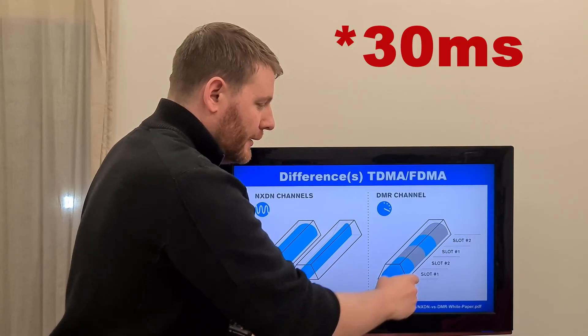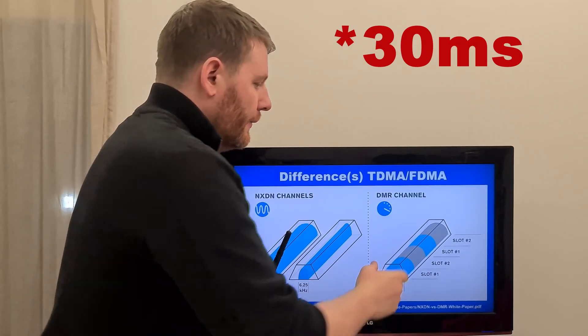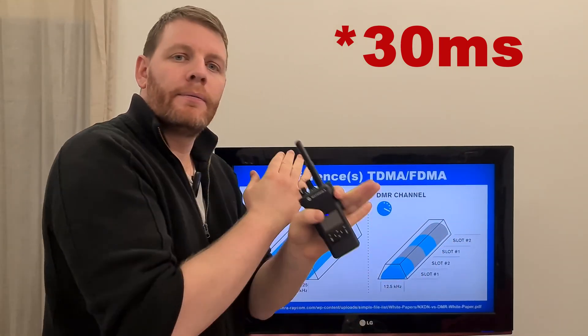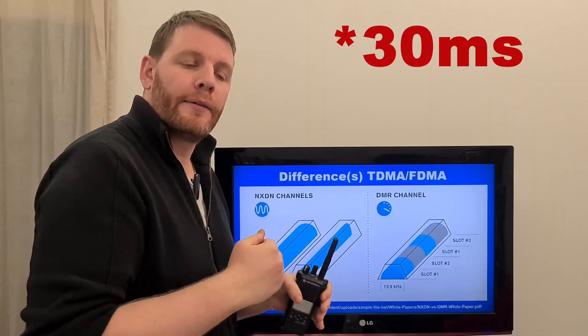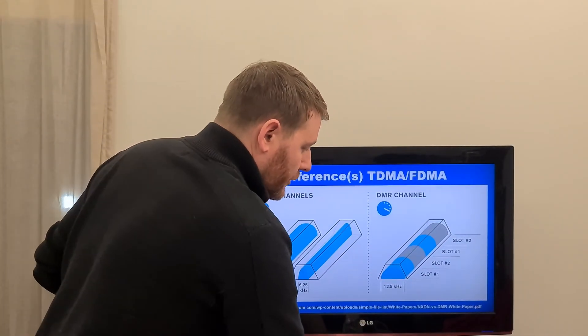So 30 seconds transmit, 30 seconds stop silence or receive, 30 seconds transmit again, 30 seconds stop transmitting and so on. This is the principle of the time division multiple access.